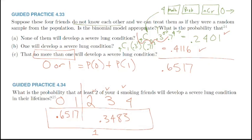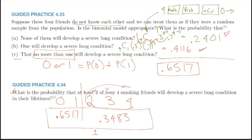There's nothing wrong with plugging two, three, and four into the formula and adding them up, but since we already had the pieces for the complement, we use 1 minus 0.6517. Read questions carefully so you're not doing extra work in the calculator.